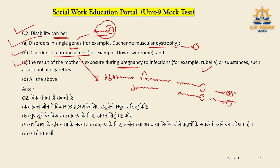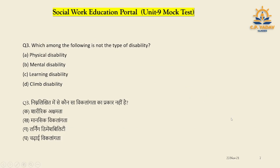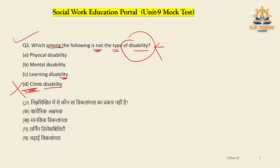The second question asks: which of the following is not a disability? Options include physical disability, mental disability, learning disability, and 'climbing disability.' Disability can be seen in problems like thinking, learning, and listening — but climbing is not a disability. So that is not correct — D is not the right answer.